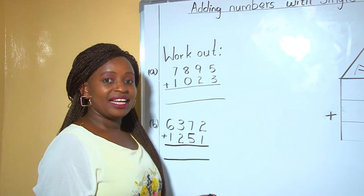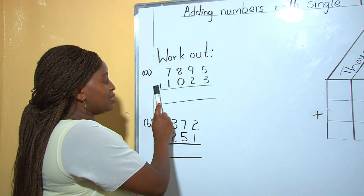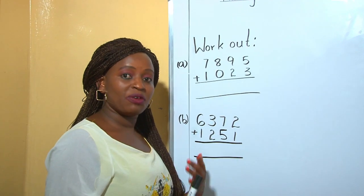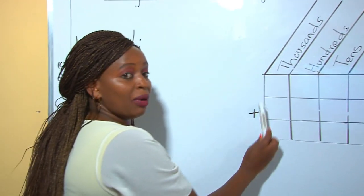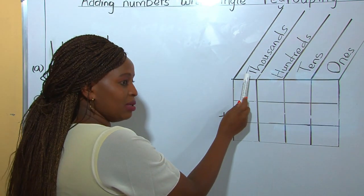Given a number like 7,895 plus 1,023, how do you go about regrouping? You draw a table like this one, then you show the ones, the tens, the hundreds, and thousands.